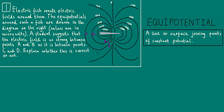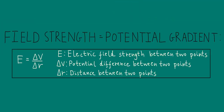So for example, all the points on this curve here, which includes points A and C, have the same value of potential, namely 250 microvolts. So how are we to figure out whether the electric field is as strong between points A and B as it is between points C and D? The key is to remember the fundamental relationship between electric field strength and electric potential, namely that the electric field strength is equal to the potential gradient, which is what this formula here is saying.